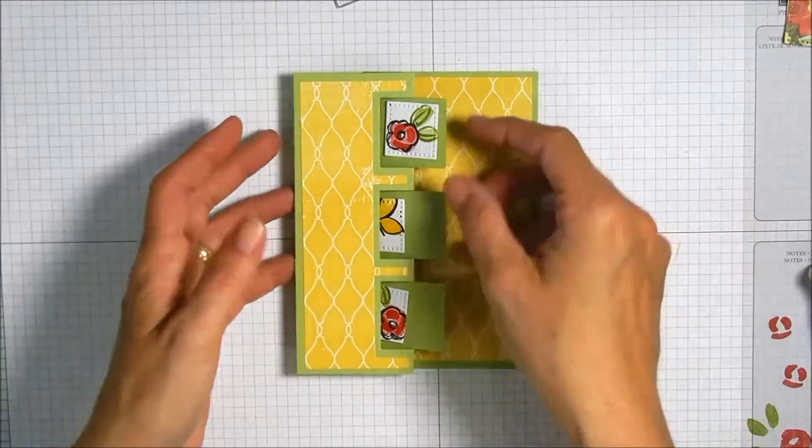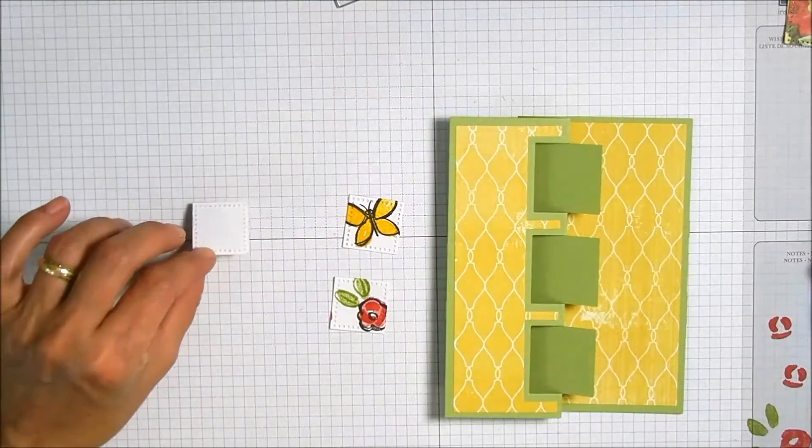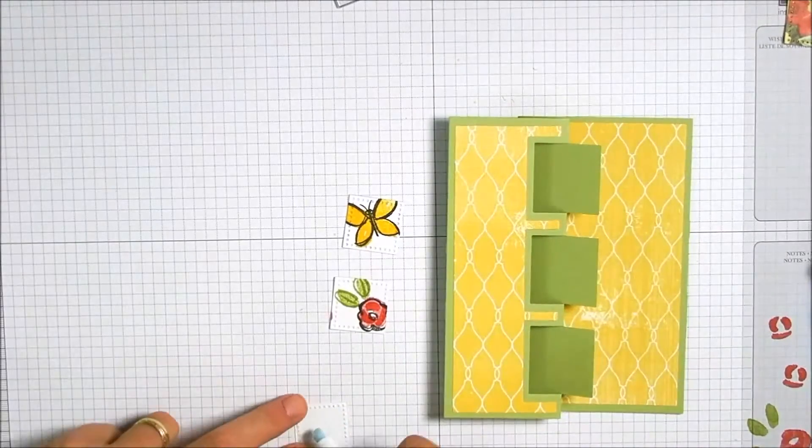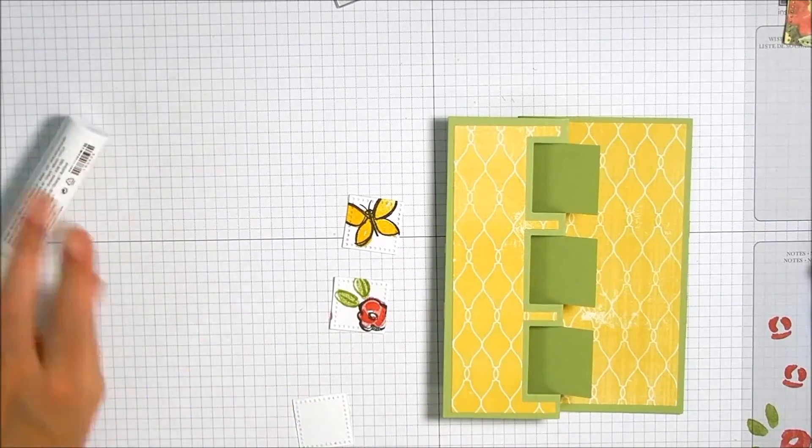Now we're going to take our little stamped squares and adhere those to the front of the card. I want to kind of put them in a random pattern there just to give it a little bit more interest.